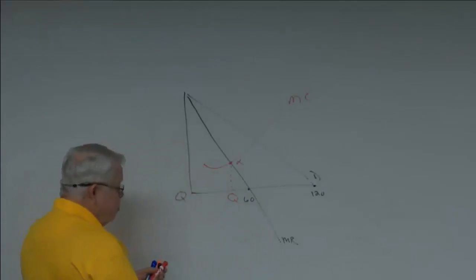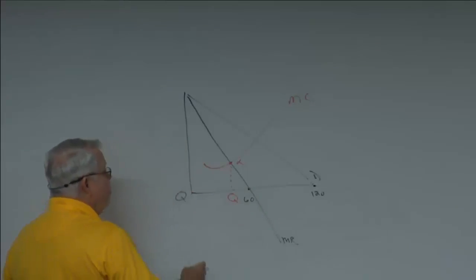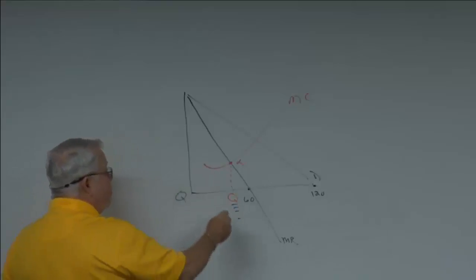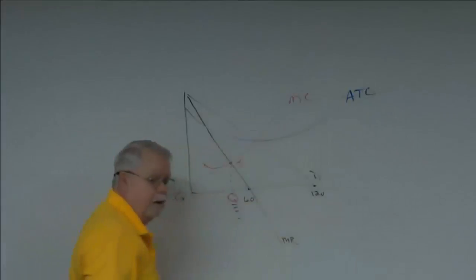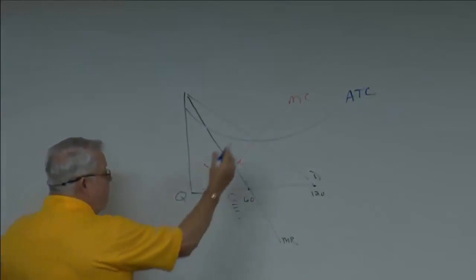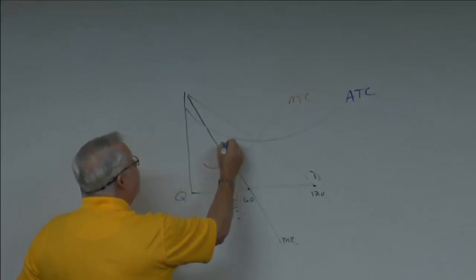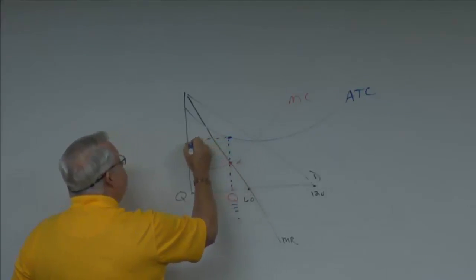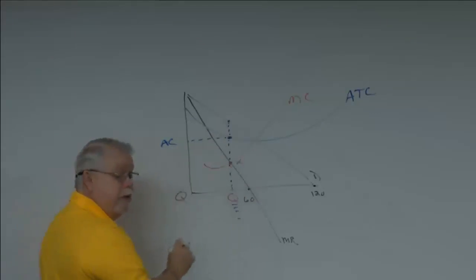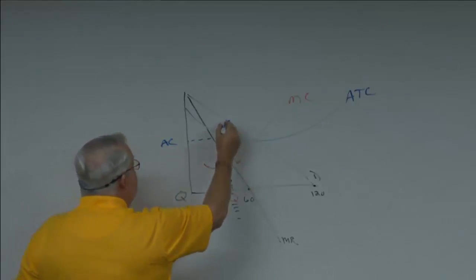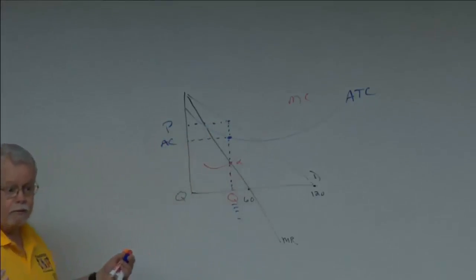The next thing I look at is: if I produce that many units, where's my average total cost curve? I read up and say, here's my average cost for every unit I produce; here's my average revenue. If average revenue is above average cost, I'm making a profit.